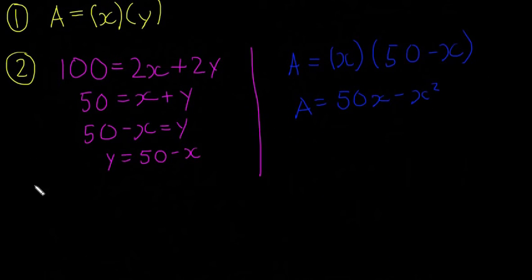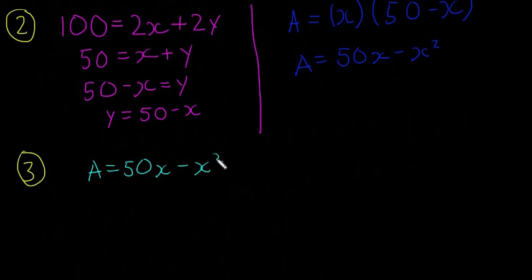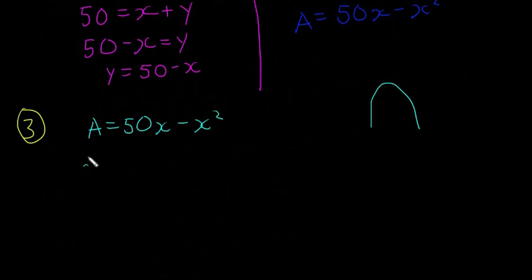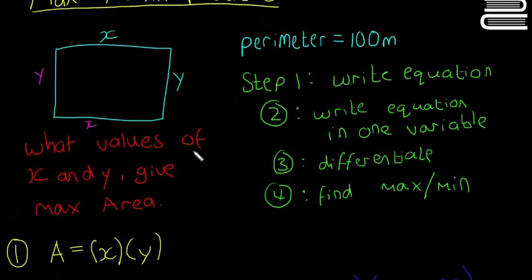Step three is to differentiate. We have A equals 50x minus x squared — that's a quadratic equation, and the minus before x squared means it's an inverted U-shape. So dA/dx — which works exactly like dy/dx, just with A instead of y — differentiates to give dA/dx equals 50 minus 2x.